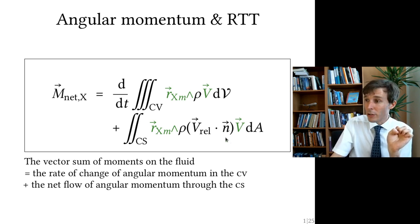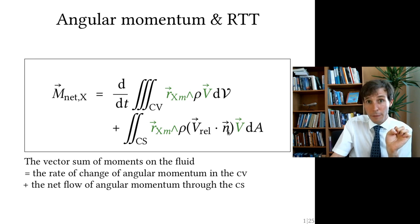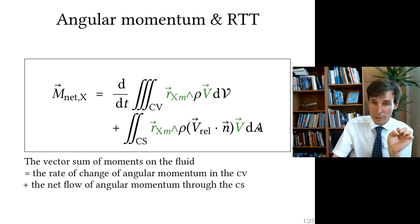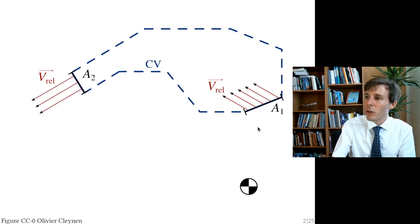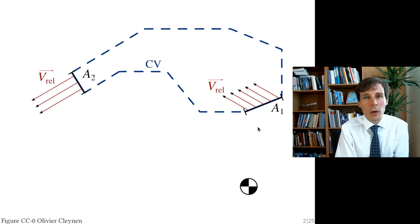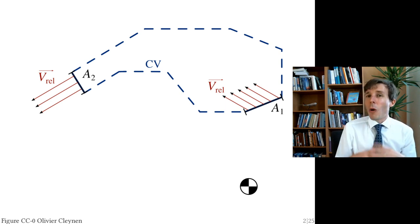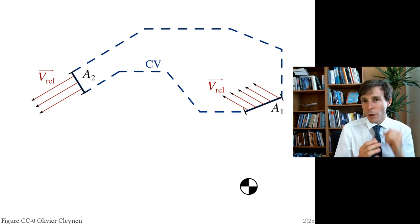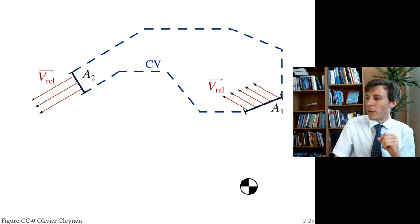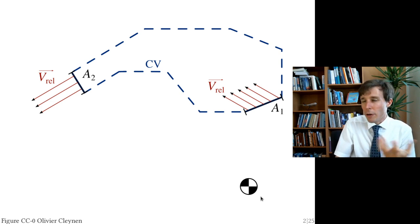Attached to the velocity is density times velocity times area, which gives the mass flow rate. Consider the case of one inlet and one outlet: moments and angular momentum are always measured with respect to one reference point, which you can choose arbitrarily.